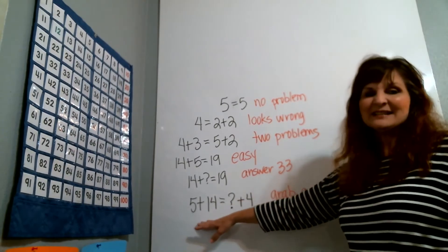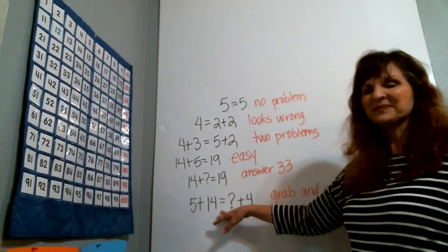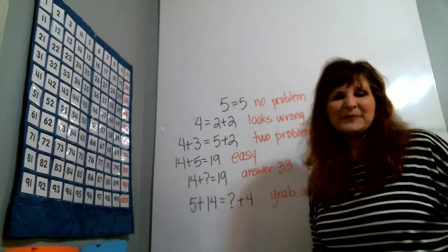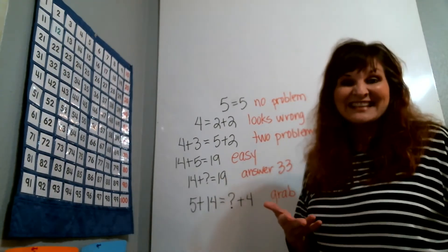And finally, if they might see something like this, 5 plus 14 has the same value as some number plus 4, they just grab all those numbers and they add them all up because there's an add sign there, there's an equal sign there, and they can't think of what else they need to do.